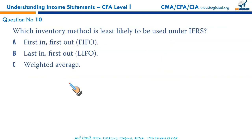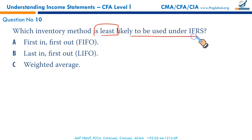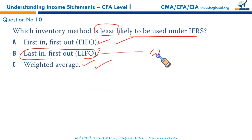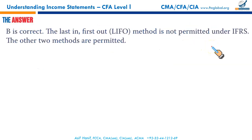Which inventory method is least likely used under IFRS? IFRS allows FIFO and weighted average, as does US GAAP, but LIFO is only permissible under US GAAP and in China. Therefore LIFO is least likely required under IFRS — that makes B the correct option.